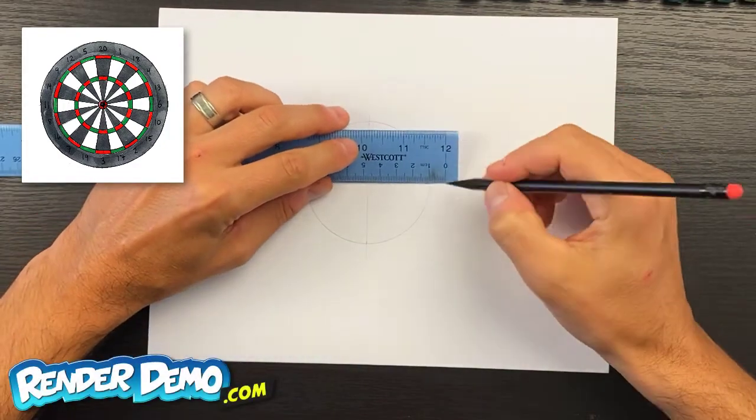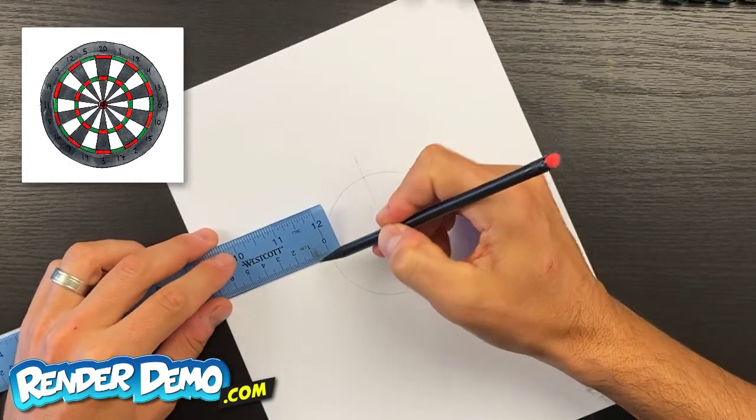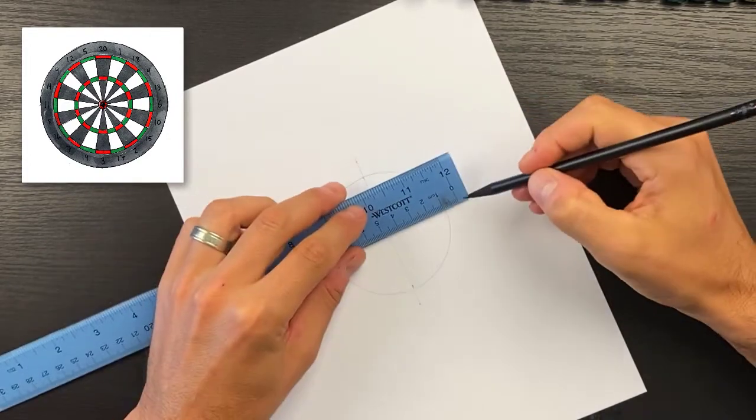I'll do that for where those hash marks are, so we'll just add a centimeter like that.